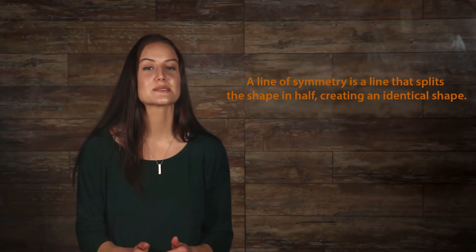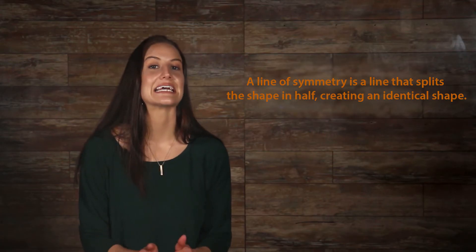Some shapes have lines of symmetry. A line of symmetry is a line that splits the shape in half, creating an identical shape. Some shapes only have one line of symmetry, some have two, and some have several.